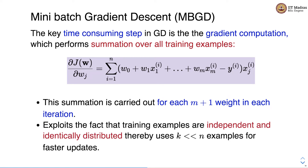MBGD exploits the fact that training examples are independent and identically distributed. Hence, instead of using all n training examples for the weight updates, we can use a small set of k examples for faster updates. These k examples are drawn from the same distribution as the overall training set, so we are expected to make progress in the right direction as far as weight update is concerned.